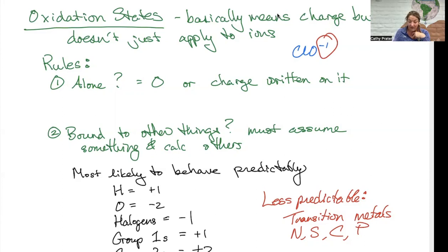So I need to assume which one is behaving normally and which one is behaving predictably. You'll learn in a minute that we can assume that oxygen is more likely to behave as expected and then other things are less likely. So based on that, the oxygen would be a negative two and the chlorine would be a positive one if I want the total to equal negative one.